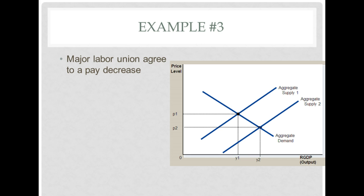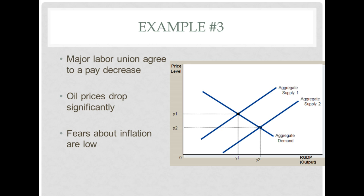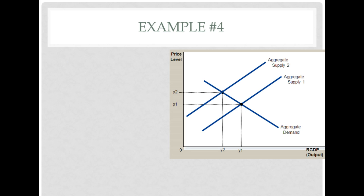Let's try some examples where the supply curve increases. If a major labor union agrees to a pay decrease — as happened with the car industry — that lowered the cost of producing cars, so aggregate supply increased. If oil prices drop, since oil affects virtually every part of production, the cost of producing almost everything decreases and aggregate supply shifts right, meaning prices are lower and GDP is higher. If fears about inflation are low, workers won't ask for as high wages, keeping production costs lower and allowing aggregate supply to shift right.